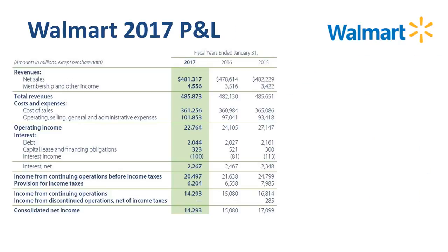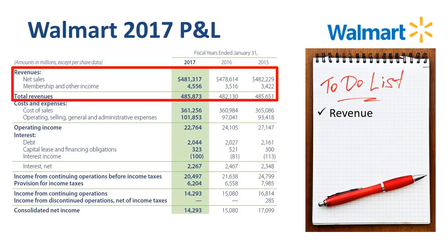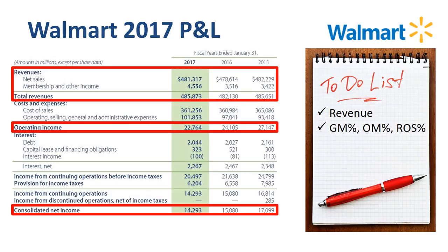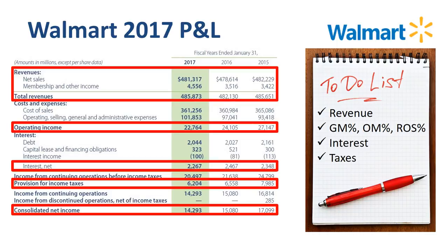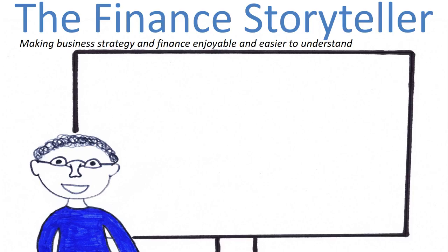That completes our analysis. We have looked into the major drivers of revenue growth, analyzed the trends in margin rates, and explained the gap between operating income and net income by looking into interest and taxes. If you want to learn more about Walmart's financial statements, I would encourage you to read the annual report and listen to the earnings releases. Please comment below, as I would love to hear what you think! I hope you enjoyed this video on how to perform a high-level income statement analysis.